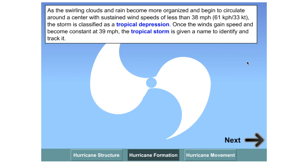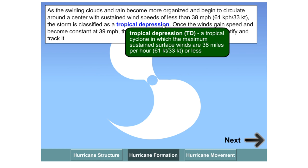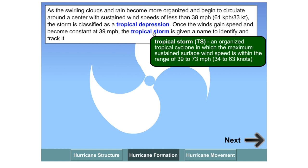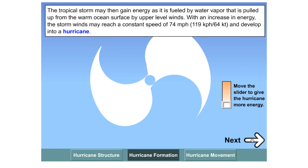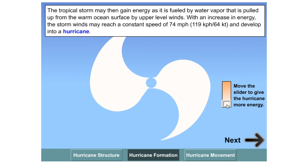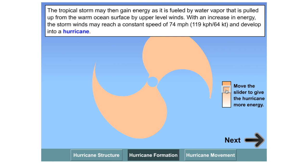However, once the wind speed gains and reaches the 39 mile an hour limit, this is then known as a tropical storm. It's given a name to identify it and various organizations around the world begin to track it because it could potentially turn into a hurricane. These tropical storms gain energy from the sea. They are fueled by the rising water vapor and pull in all of this energy from the warm ocean sea surface temperatures. The energy of these storms can constantly increase, but it's not until they reach 74 miles an hour, or approximately 119 kilometers an hour, that they are officially classified as a hurricane.